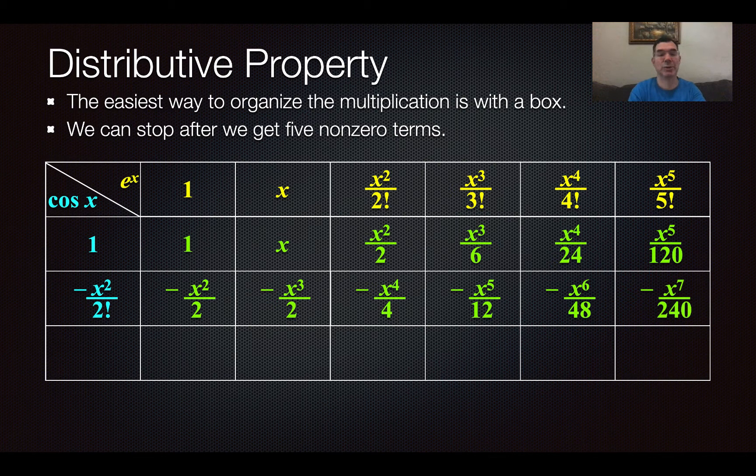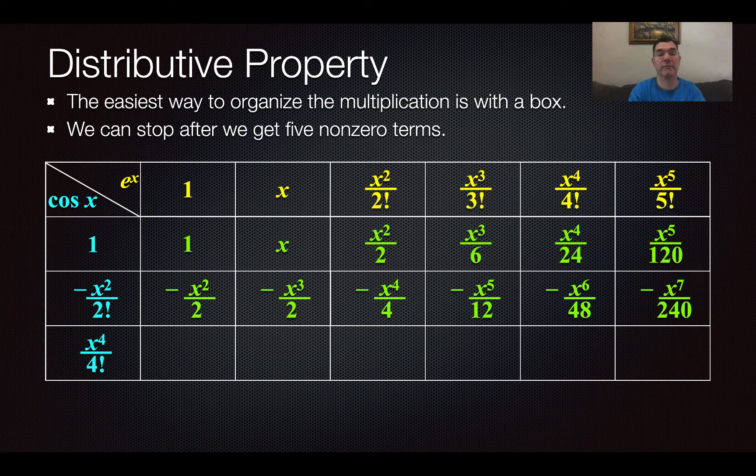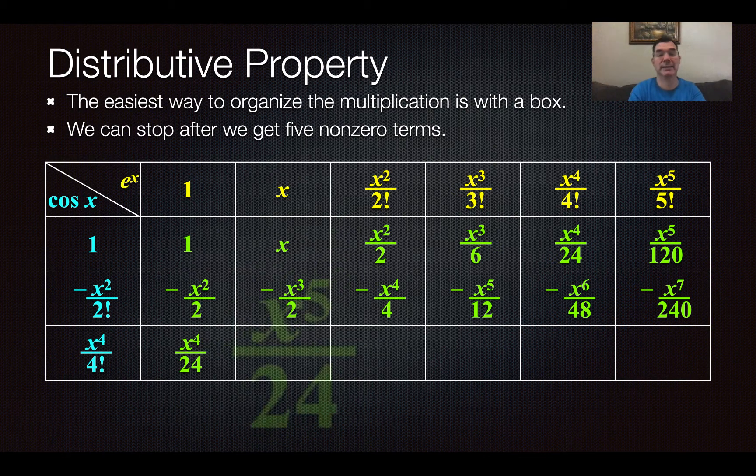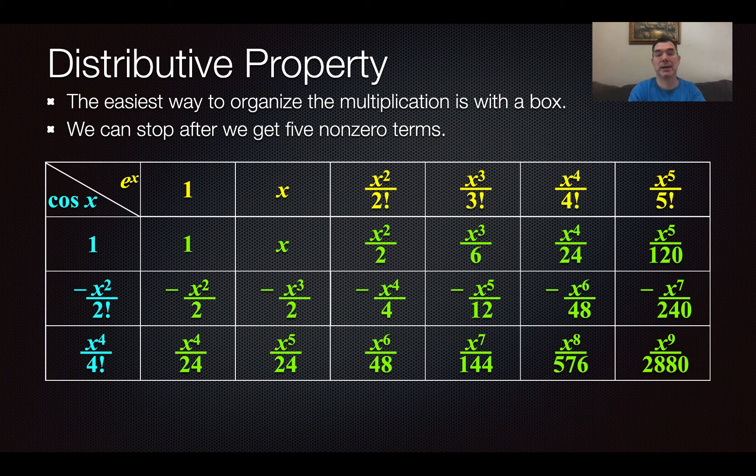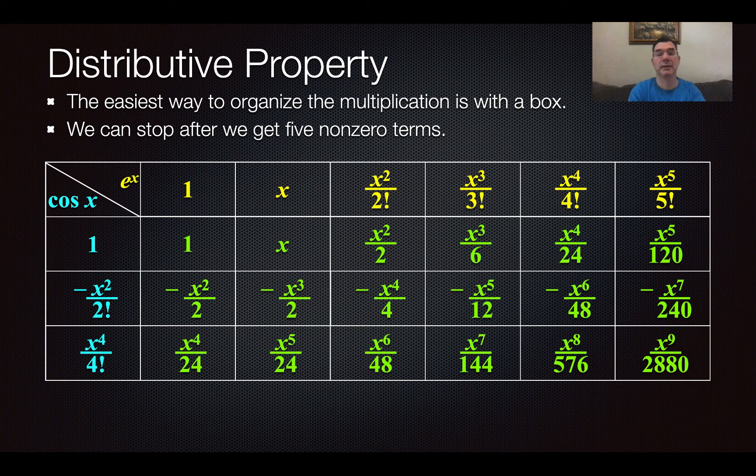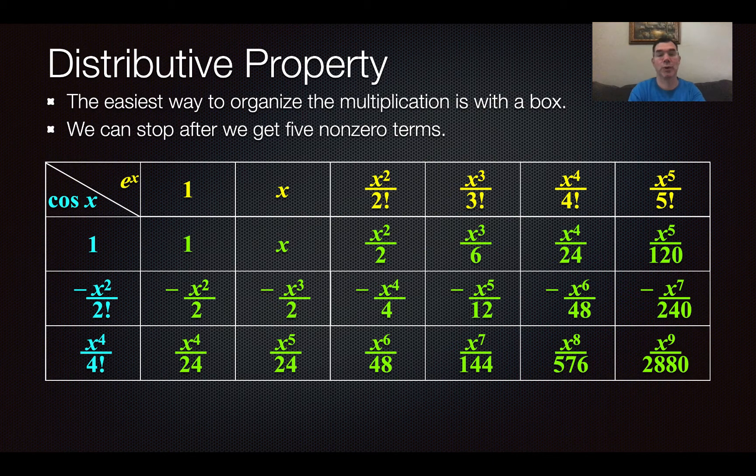And then the last term that I need to concern myself with in the Maclaurin series for cosine x is x to the fourth over 4 factorial. So again, I'm taking that and I'm multiplying every yellow term by that, and here's what I get. So I know that I've done enough terms to get five non-zero terms, which is what I'm asked for.